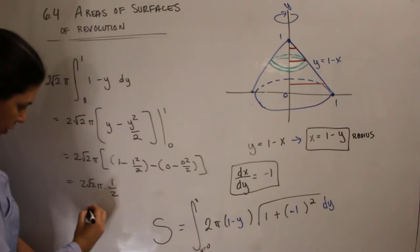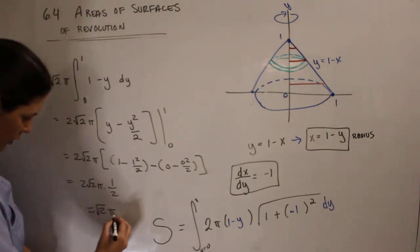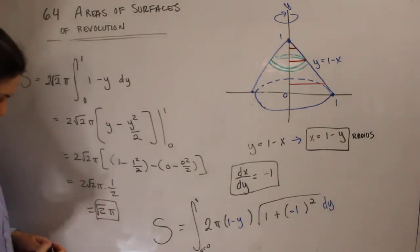Final answer, 2 square root 2 times pi. All right. We did it.